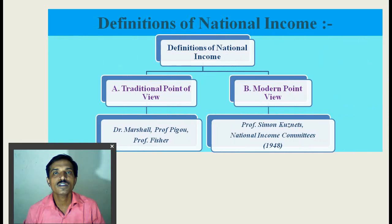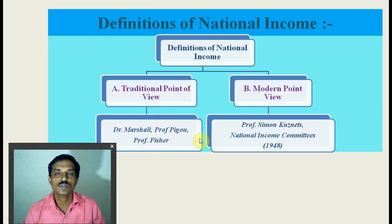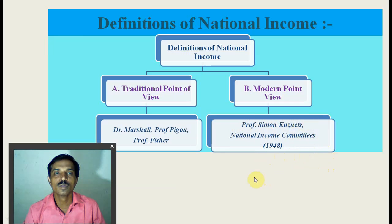Various definitions have been given by economists about national income. There are two views on the definition of national income: the traditional view and the modern view. The traditional view includes Dr. Marshall's definition, Prof. Pigou's definition, and Prof. Fisher's definition. From the modern point of view, definitions are given by Prof. Simon Kuznets and by the National Income Committee of 1948 in India.